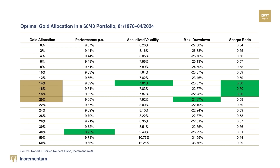These findings harmonize well with the results of previous studies, which recommend a gold allocation of 10 to 19 percent. However, given the current market conditions, an increased allocation of approximately 25 percent appears appropriate.